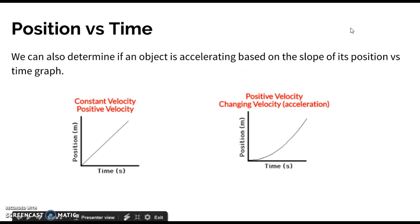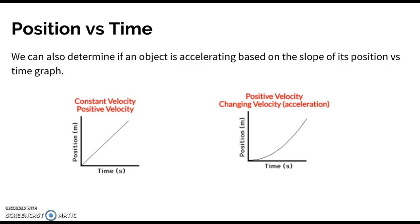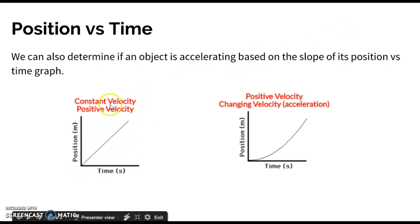We can determine if an object is accelerating based on the slope of the position versus time graph. If the graph is a straight line, velocity is constant because the slope has the same value throughout. Since our slope is constant, our velocity is constant — meaning we're not accelerating, so we have zero acceleration.